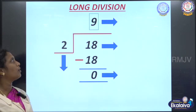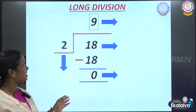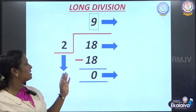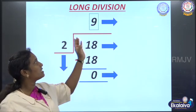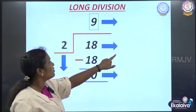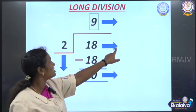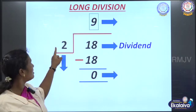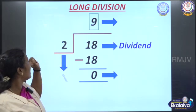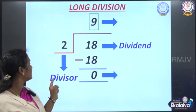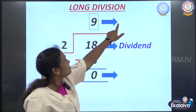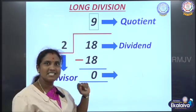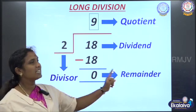Now you are going to identify which is the dividend, which is the divisor, which is the remainder, and which is the quotient. Can you tell me what is this? Yes, alright — this is the dividend. What is this? Yes, alright — divisor. This one? Yes — quotient. What is this? Yes, it is the remainder.